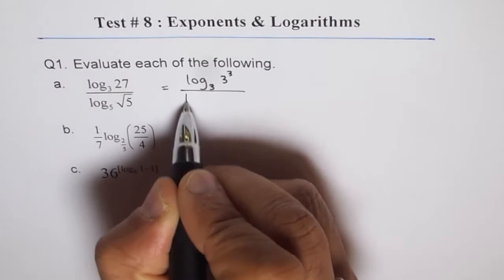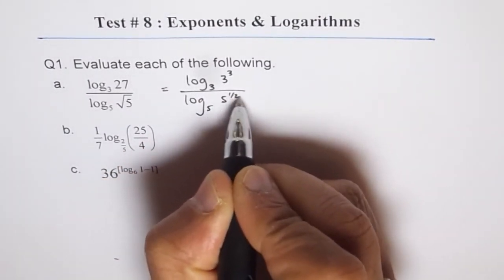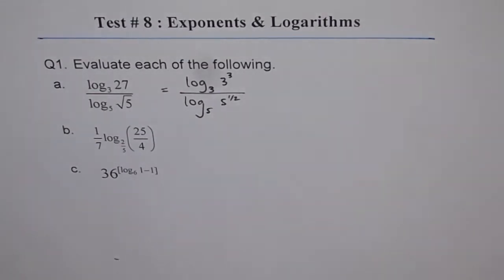So we can write this as log to the base 3 of 3 to the power of 3. And denominator could be written as log to the base 5, 5 to the power of half. This first question is a very basic question to teach you the concept and slowly we are getting into very tough questions in this set.